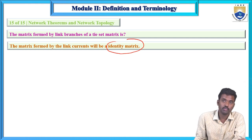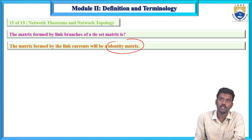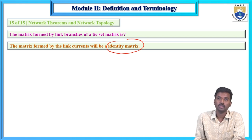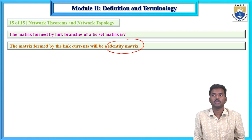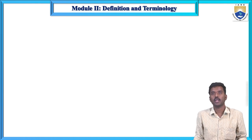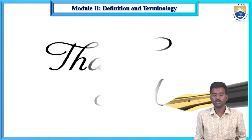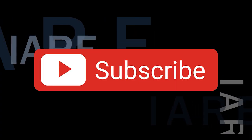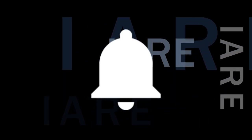These are the total 15 questions in Module 2 — DC networks and network topology. Thank you very much. Like, share, and subscribe, and hit the bell icon for more updates.